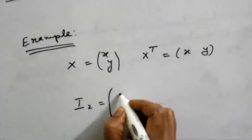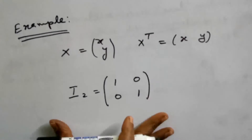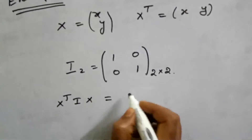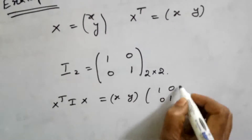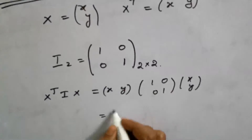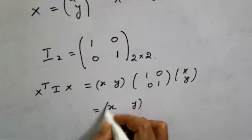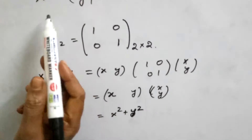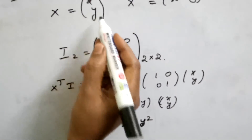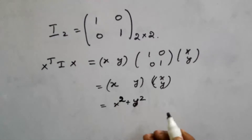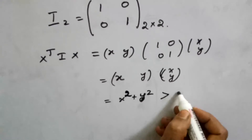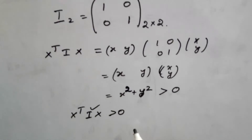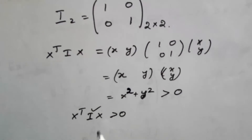Now we will check the 2 by 2 identity matrix. We check x-transpose Ix, which equals [x, y] [1,0; 0,1] [x; y]. The product gives x squared plus y squared. These are square terms. Since we choose x as a nonzero column vector, x and y are non-zero real numbers — positive or negative. So x squared plus y squared is greater than 0. Therefore, x-transpose Ix is greater than 0, and the identity matrix I is a positive definite matrix. In fact, any n by n identity matrix is a positive definite matrix.